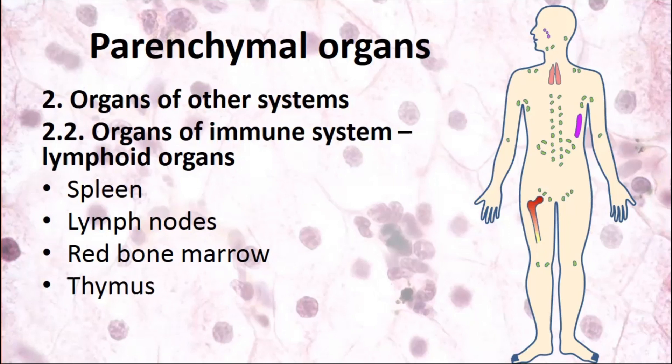One system remains — the immune system — which includes immune lymphoid organs. These organs have a different structure from other parenchymal organs because their parenchyma is not formed by epithelium but by immune cells — immunocytes — that provide immune functions. There are organs of the immune system: spleen, lymph nodes, red bone marrow, and thymus. Red bone marrow and thymus are central organs; spleen and lymph nodes are peripheral.